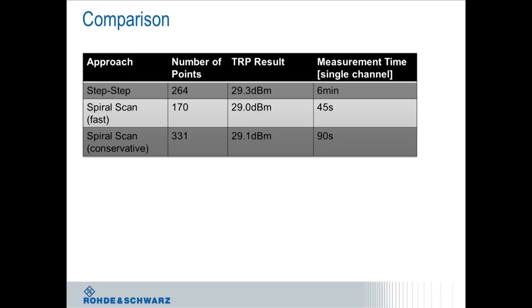Okay, let's look at a comparison of these two approaches, step-step and spiral scan. So the first approach here, step-step, we looked at 264 points on the 3D sphere. The TRP that we measured in our system was 29.3 dBm and the measurement time was six minutes for a single channel. So a single channel means that you have to test on more channels. How many channels do you test normally? We usually test on three channels per frequency band. Well, that means then 18 minutes for the traditional step-by-step approach. Absolutely.